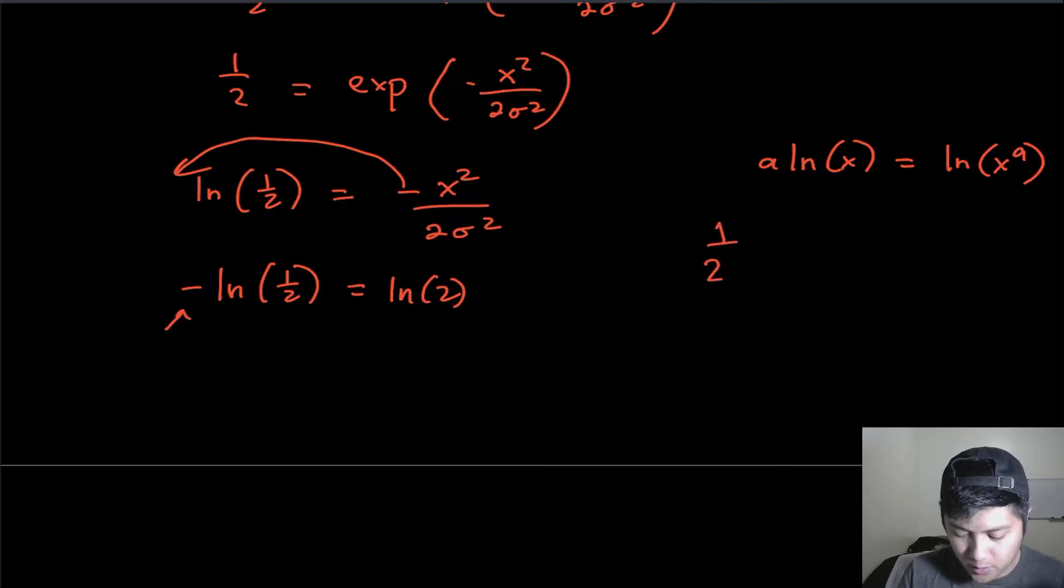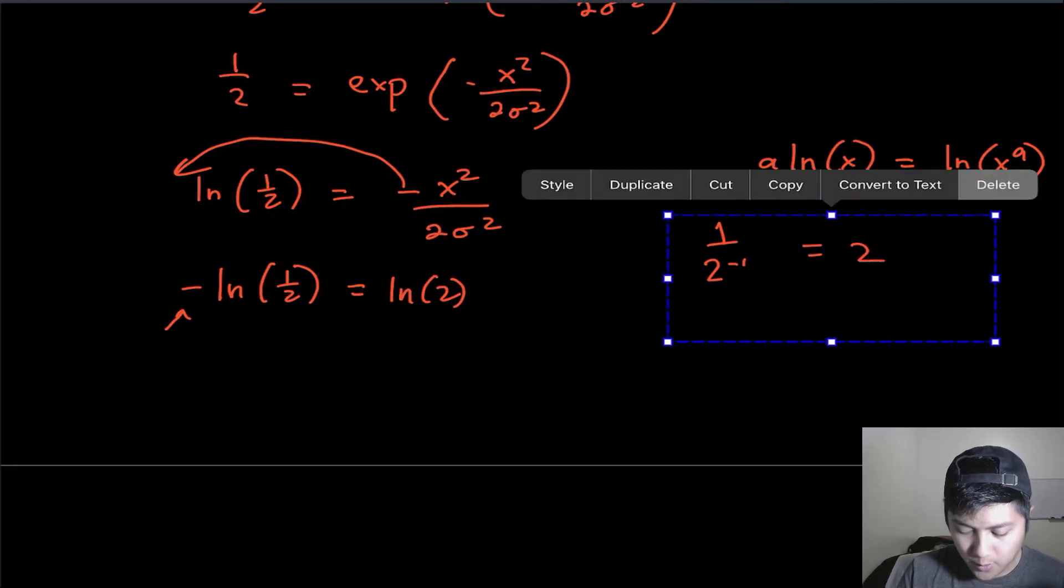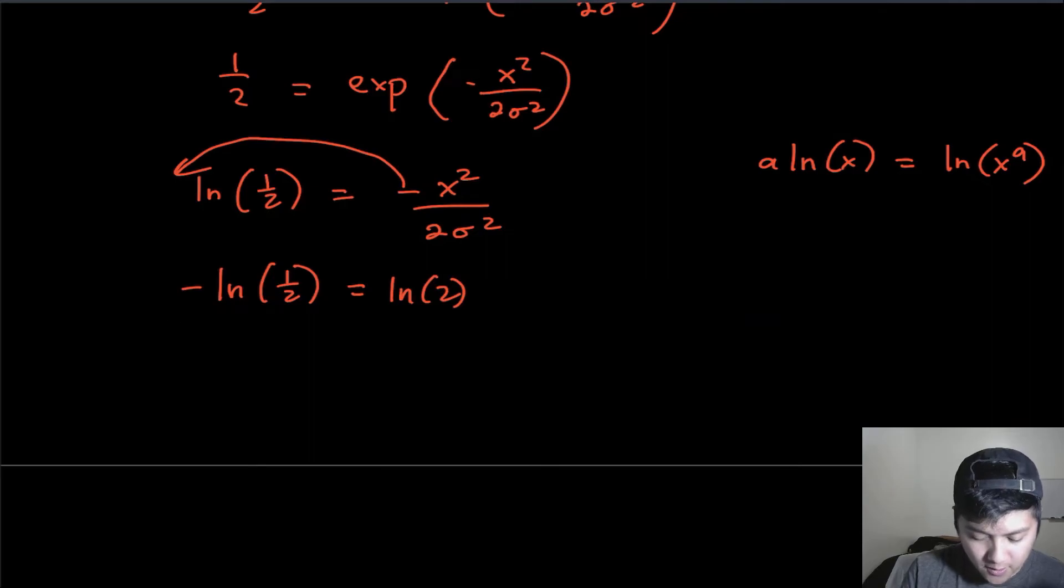And if you have one over two to the minus one, that's just equal to two. So that's why we can do that. So we are going to do that because it looks nicer. And because I said so, and this is still equal to x squared over 2 sigma squared.